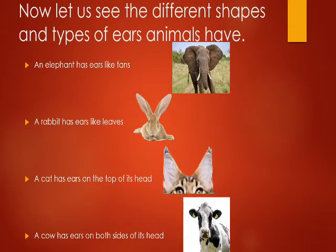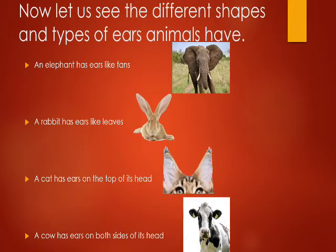Now let us see the different shapes and types of ears animals have. An elephant has ears like fans. A rabbit has ears like leaves. A cat has ears on the top of its head, and a cow has ears on both sides of its head.